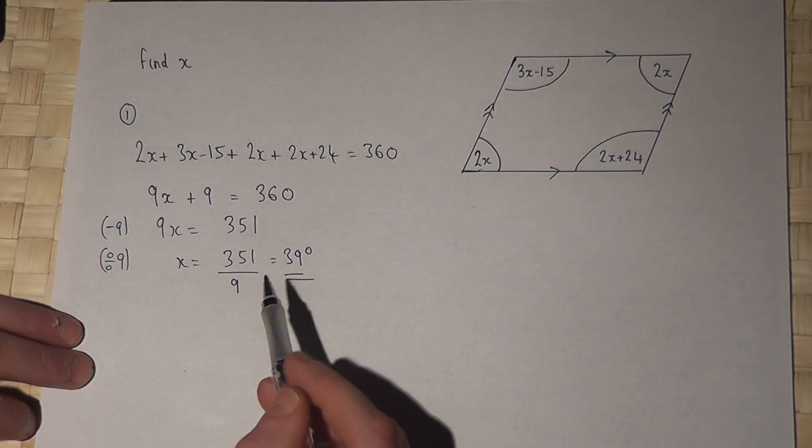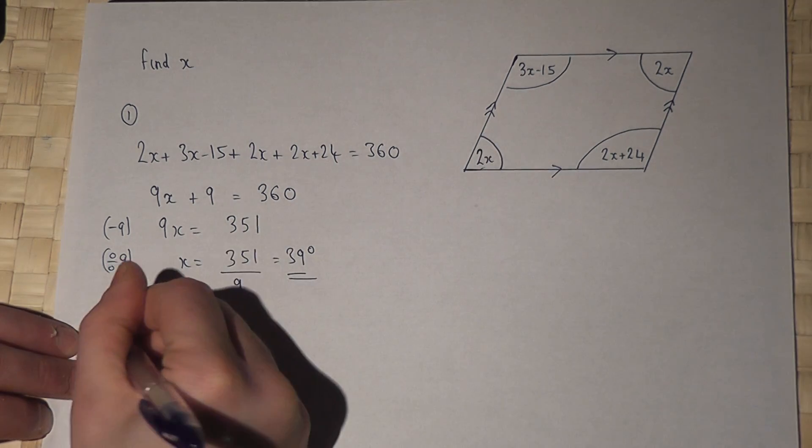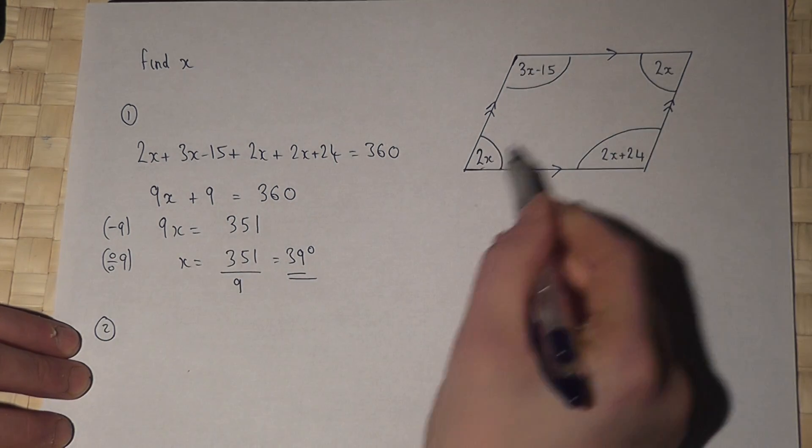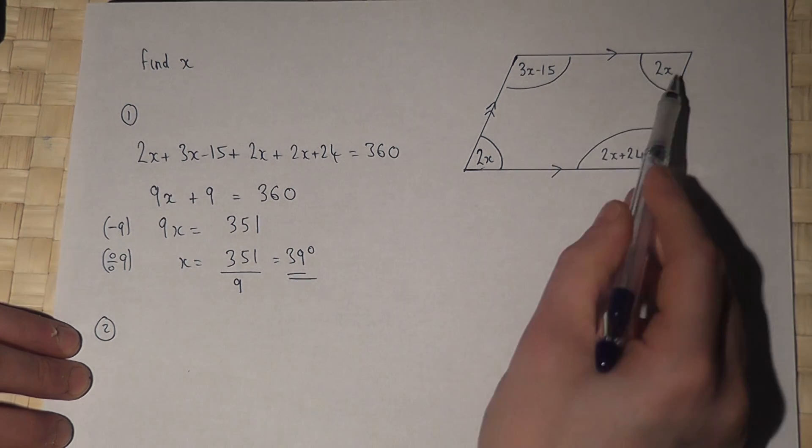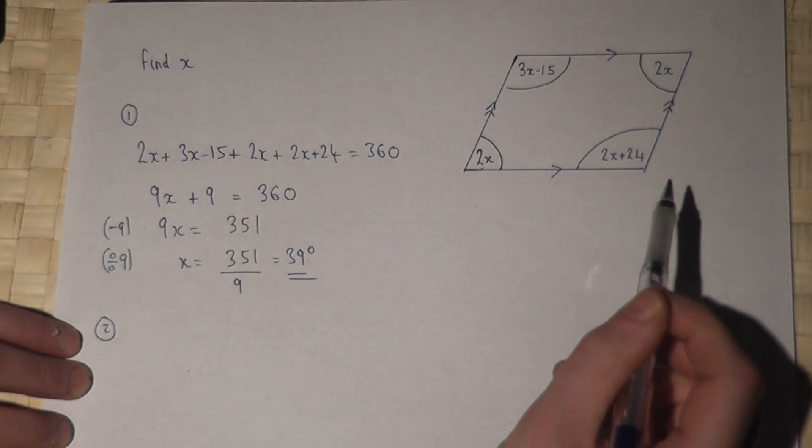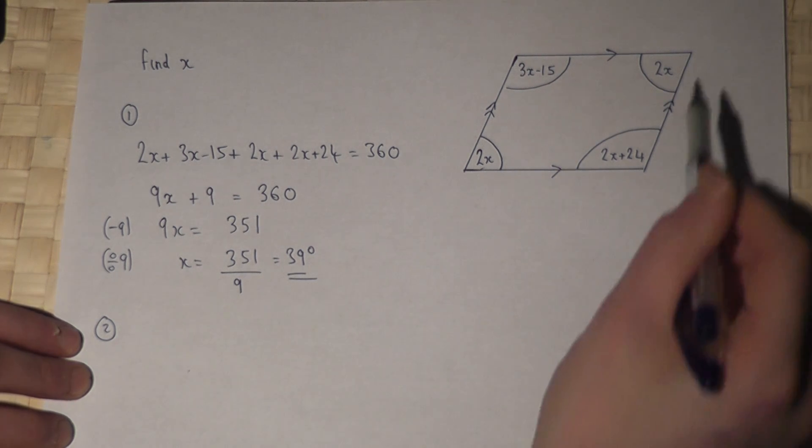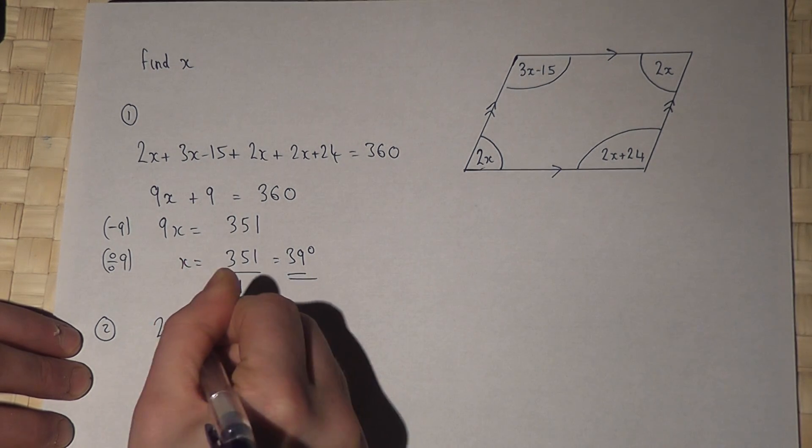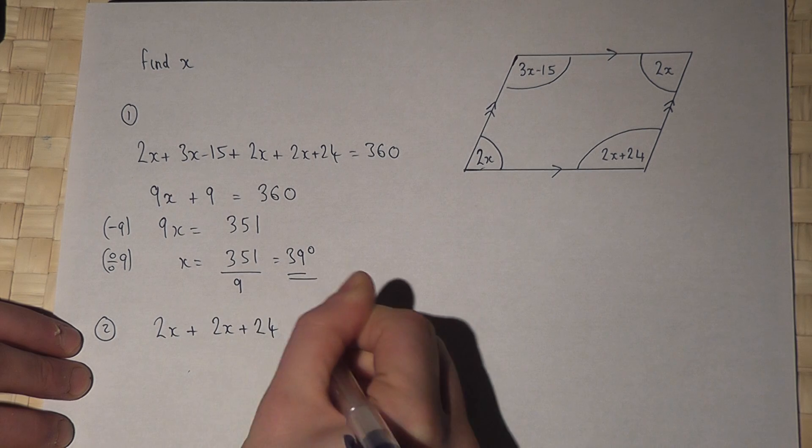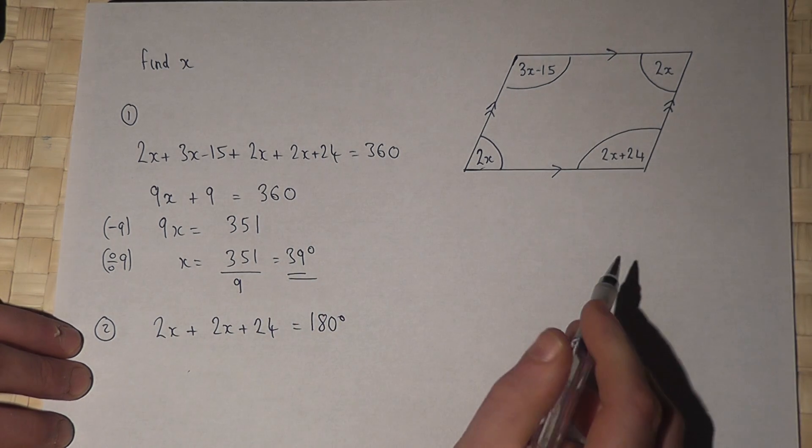Now I can get the same solution in a different way. Because these lines and these lines are parallel, then any two pairs of angles must add to 180. So if I picked any pair that are next to each other, I'll pick those two there. Then 2x plus 2x plus 24 will equal 180 degrees. They're called supplementary angles.